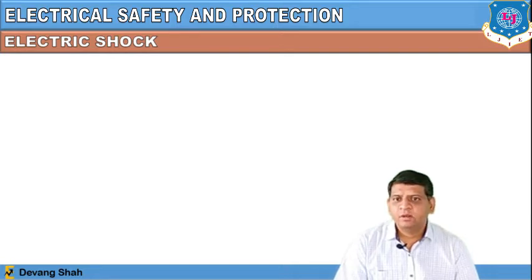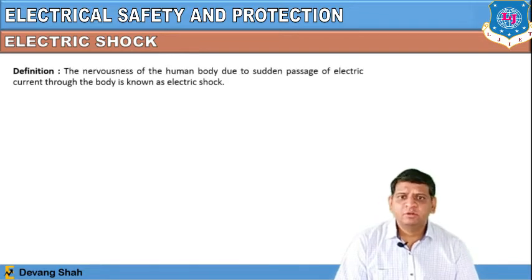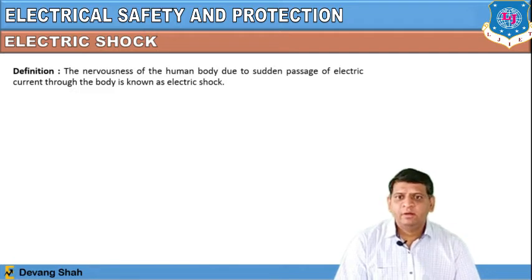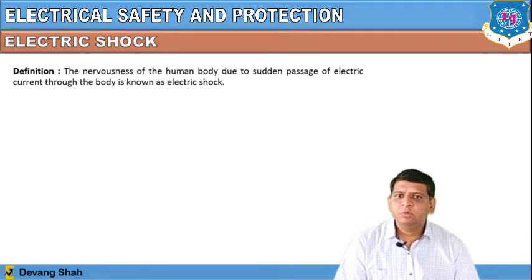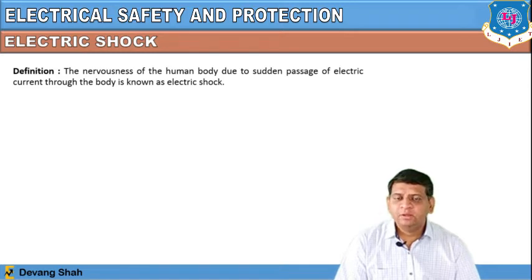Our first topic is electrical shock. The definition says: the nervousness of the human body due to the sudden passage of electric current through the body is known as electric shock. If the human body experiences the flow of current through it, that is defined as an electric shock.